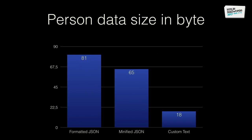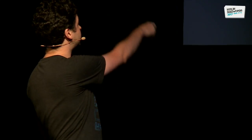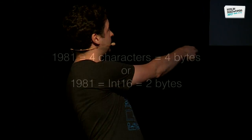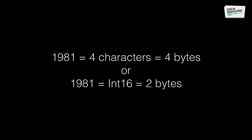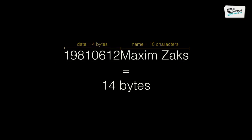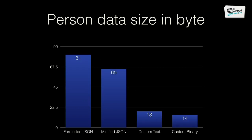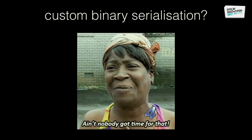Can we do even better? Yes. We can say 1981 is a number. We represent it as text in four characters, but as a number we can represent it as an int16 with two bytes — getting down to 14 bytes total. That's a 25% reduction, which is interesting.